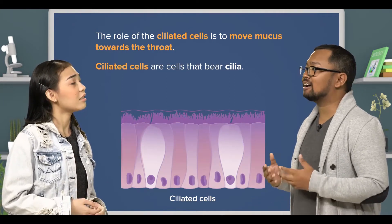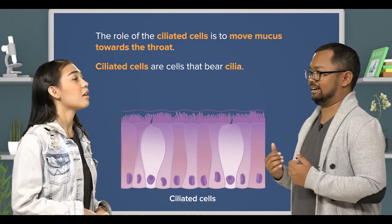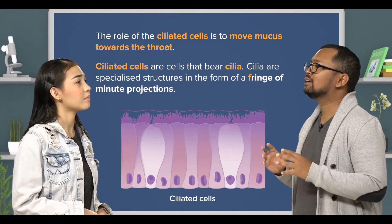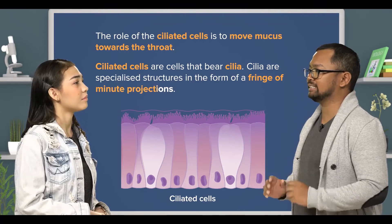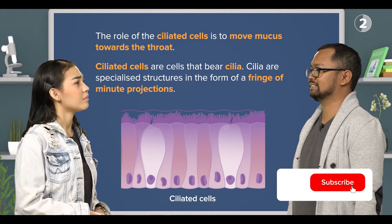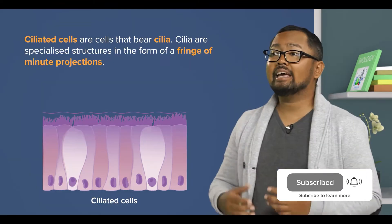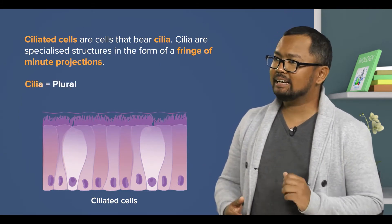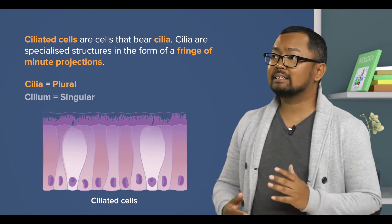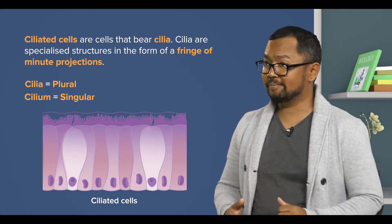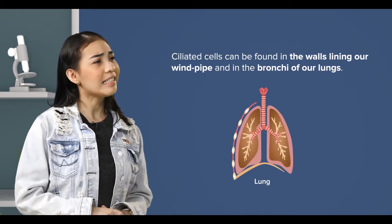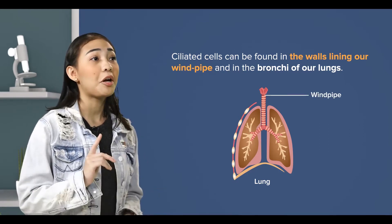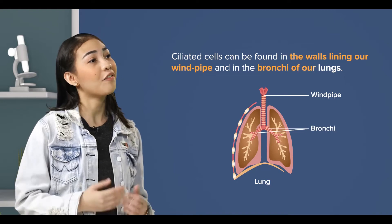Ciliated cells are cells that bear cilia. Cilia are specialized structures in the form of a fringe of minute projections. In our body, they can be found in several places. Cilia is the plural term. The singular term is cilium. Ciliated cells can be found in the walls lining our windpipe.